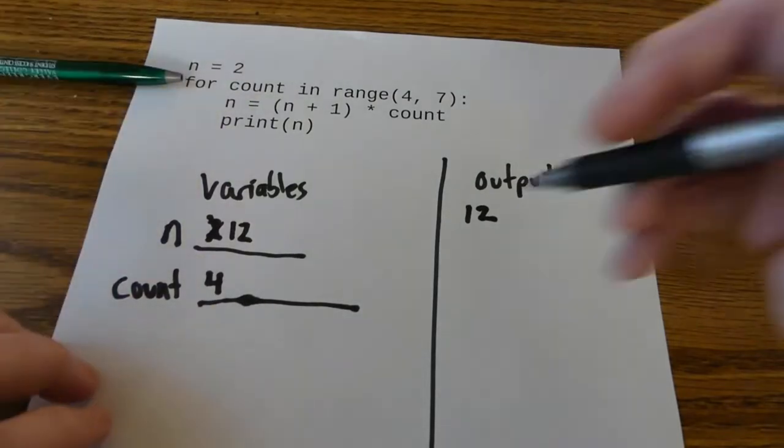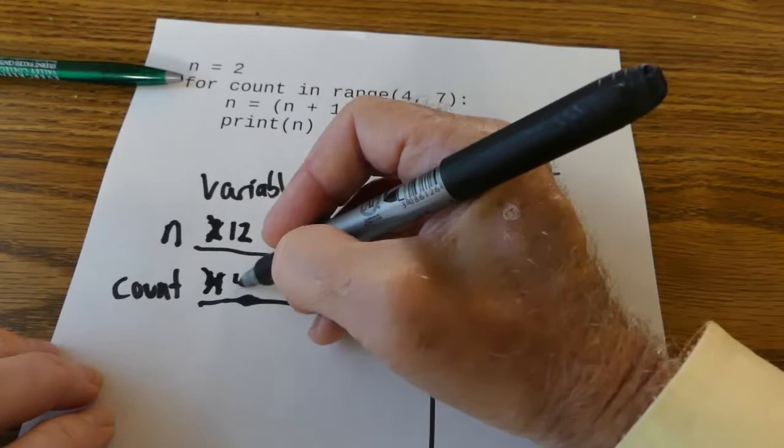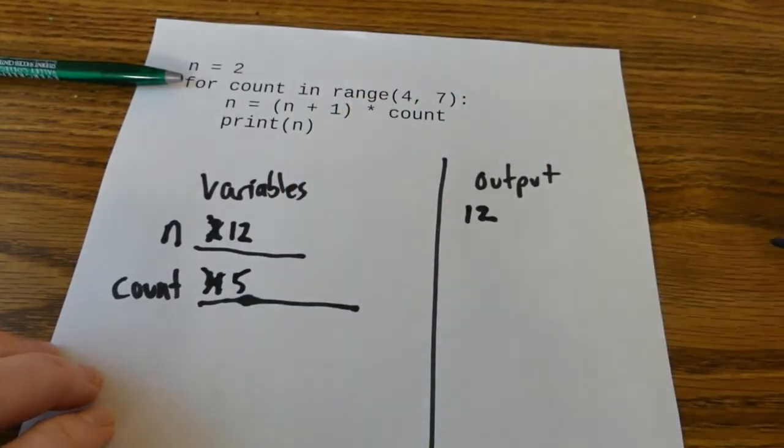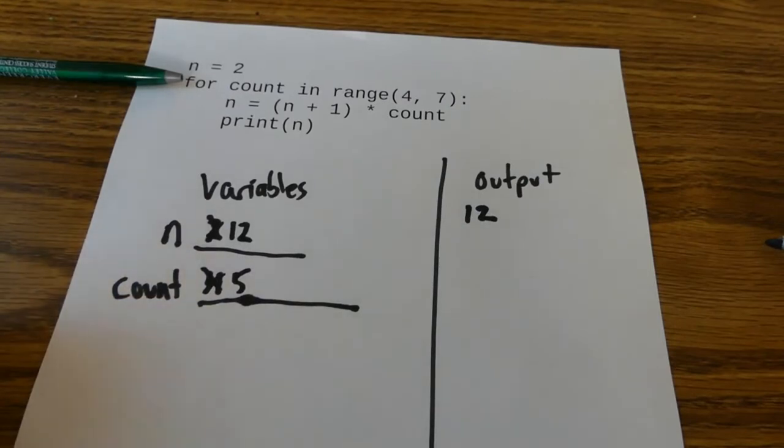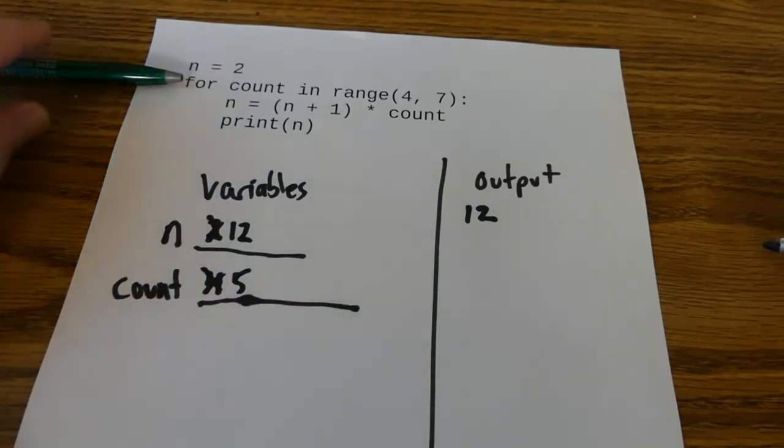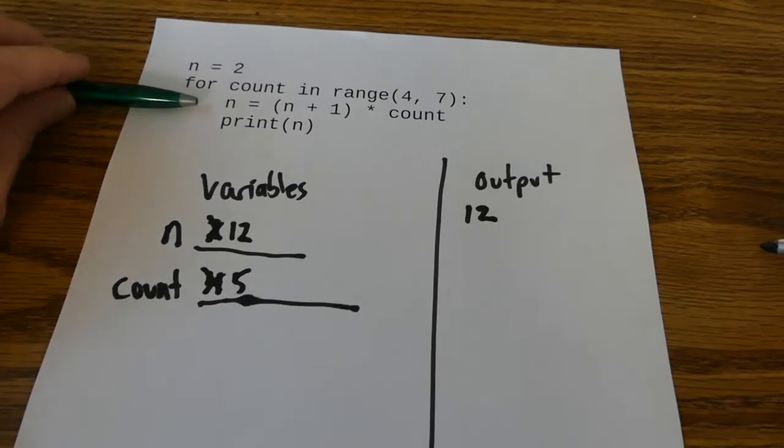I come back up to here and my count now becomes 5. Notice I don't write down count again twice or n twice. I keep one line per variable. Count is now 5 and I move on to here because I'm still in my range.